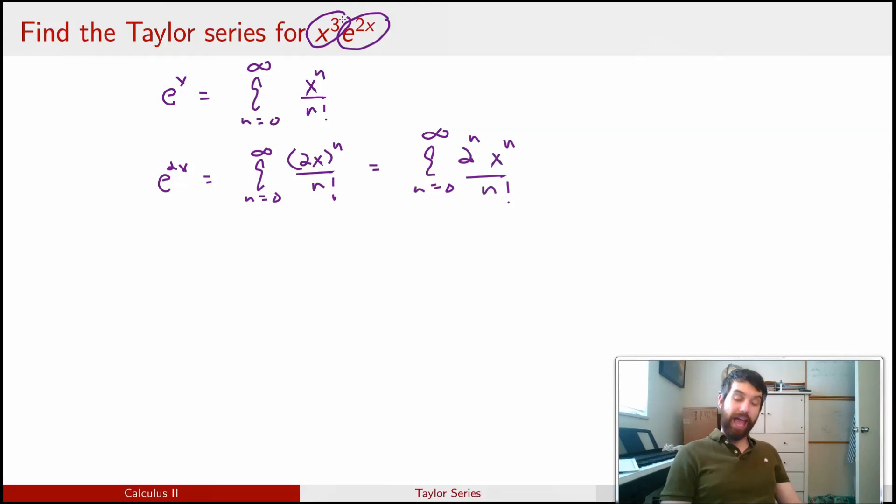And then finally what we have is that corresponds to the e^(2x) part, but I've also got this x³ portion. So if I want to write out what x³e^(2x) is going to be, then I'm just going to multiply everything by x³. So in other words, the 2^n remains, the n factorial remains, but now the x^n becomes x^(n+3), as I add 3 copies of x to it.